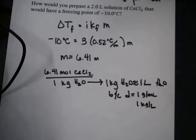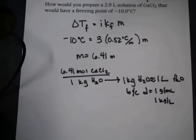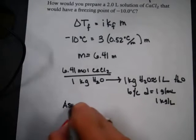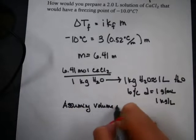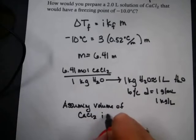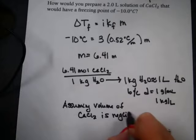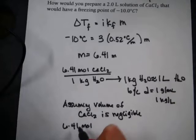It's about one liter, 6.41 moles of calcium chloride in one liter of water. As long as the calcium chloride isn't taking up much of the space, as long as most of that volume is coming from water, then that would be about one liter of solution, which is what they're asking about. It's not perfect, I have to assume some things, but that's how I'm going to get it done.